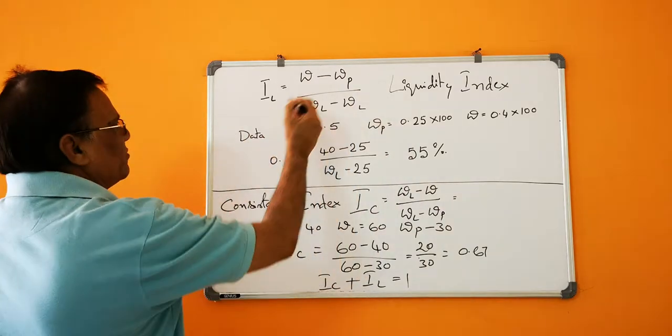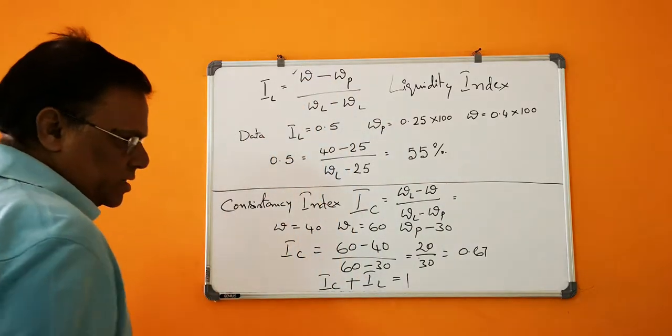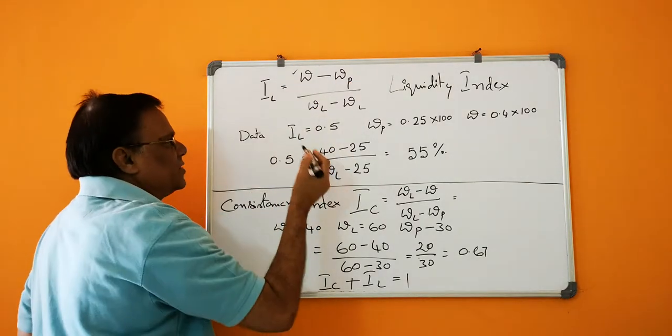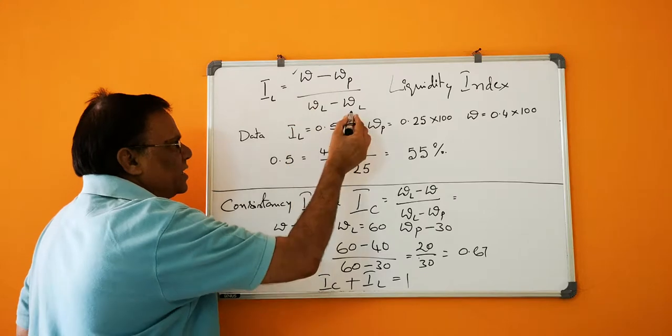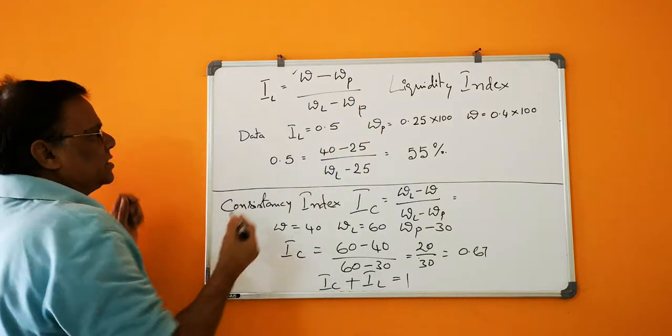The liquidity index is given as natural water content or water content in the site minus plastic limit of the soil, divided by liquid limit of the soil minus plastic limit of the soil.